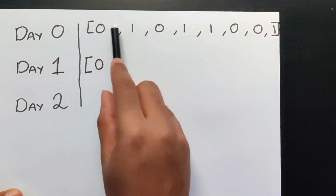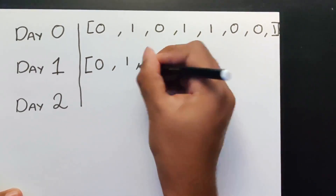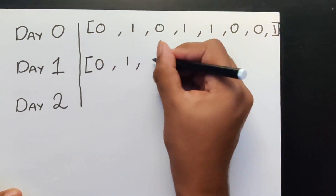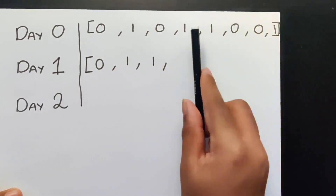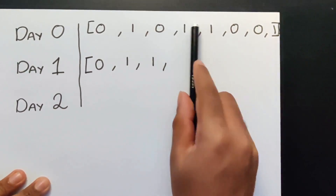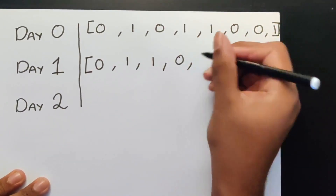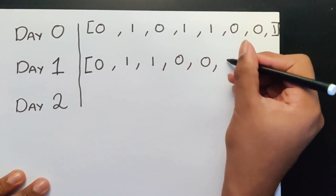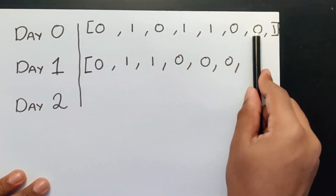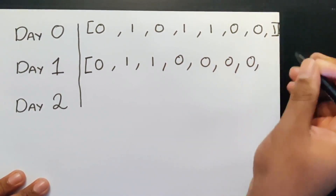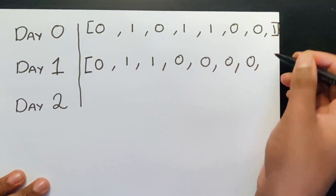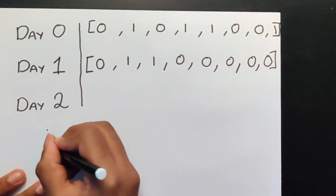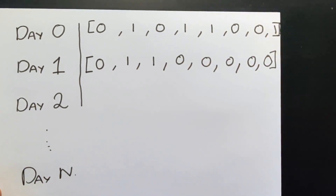Now let's look at this. Both the adjacent cells are the same, so this is going to stay as one. If you look at this one as well, both the adjacent cells are the same — both of them are one — so this is also going to become one. Over here both the adjacent cells are not the same, so it's going to become zero. Similarly over here both the adjacent cells are not the same, so zero. And over here same thing — they're not the same, hence it's zero. Over here as well not the same, so it's a zero. And finally the ending is a one, but right from day one onwards it's going to become a zero.